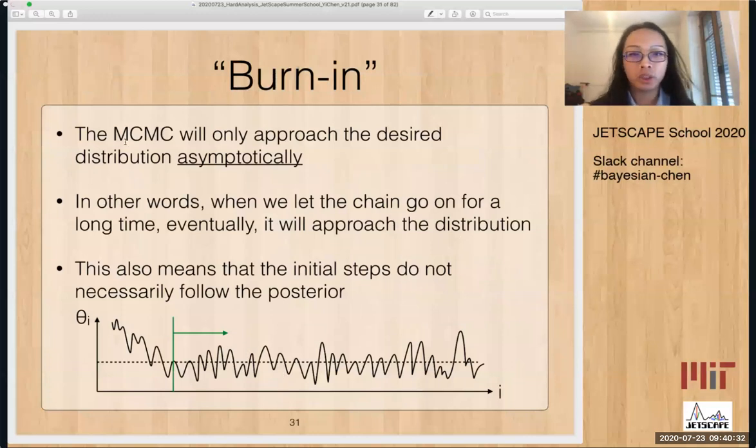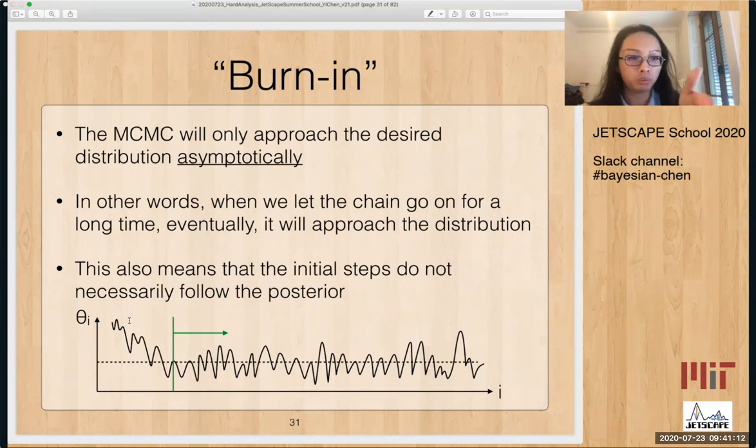And the other consequence will lead to what we call the burn-in effect. So the MCMC will only approach the desired distribution asymptotically, meaning that if we let it iterate and go for a very long time, eventually the samples will approach what we want. And this also means that the initial steps do not necessarily follow our desired distribution. So for example, if your posterior distribution has a two-peak structure, initially it will start from one of the peaks and will stay there for a long time. And if you don't wait long enough for the chain to move to the next peak, then all your samples will be on one side and that is not what we want.